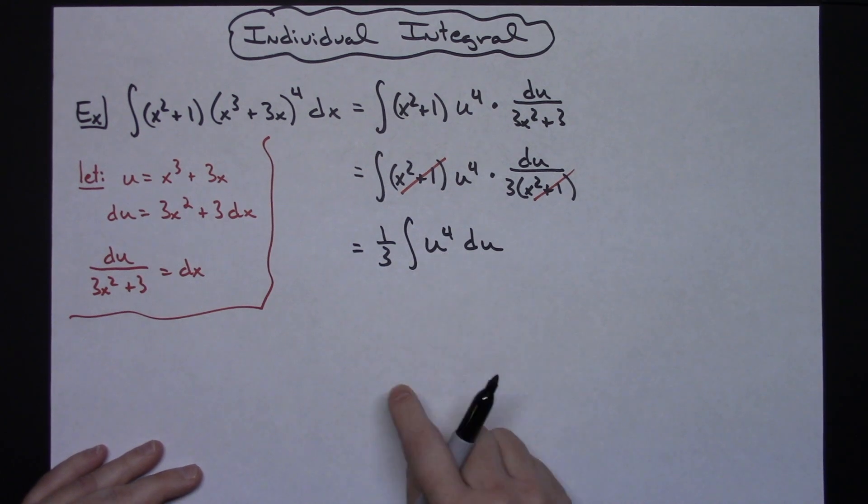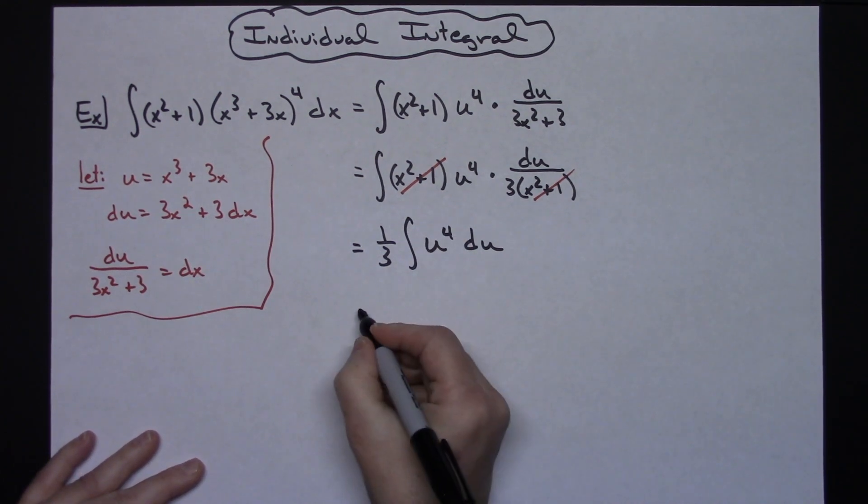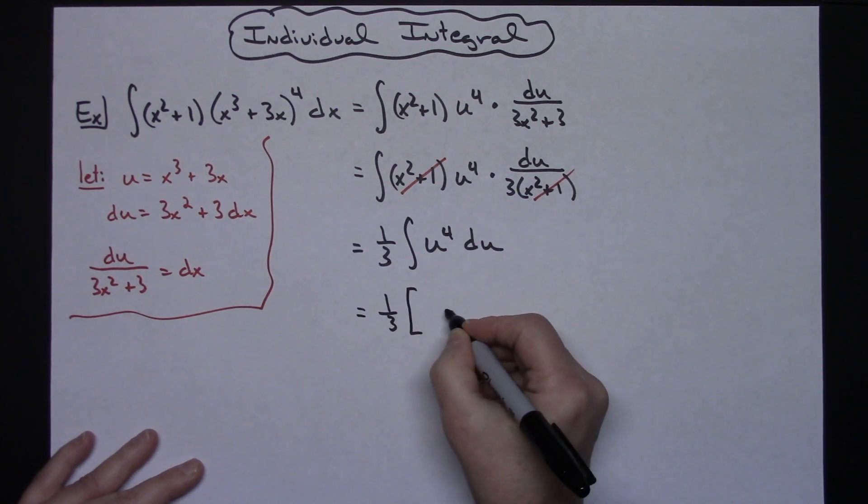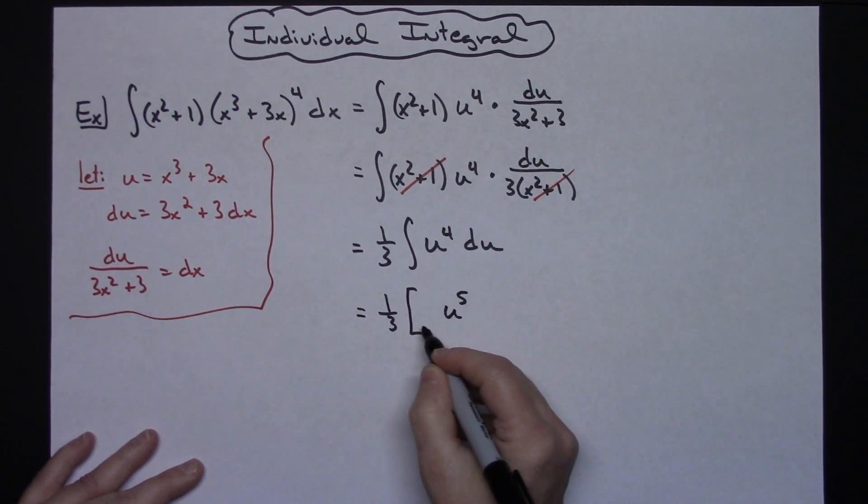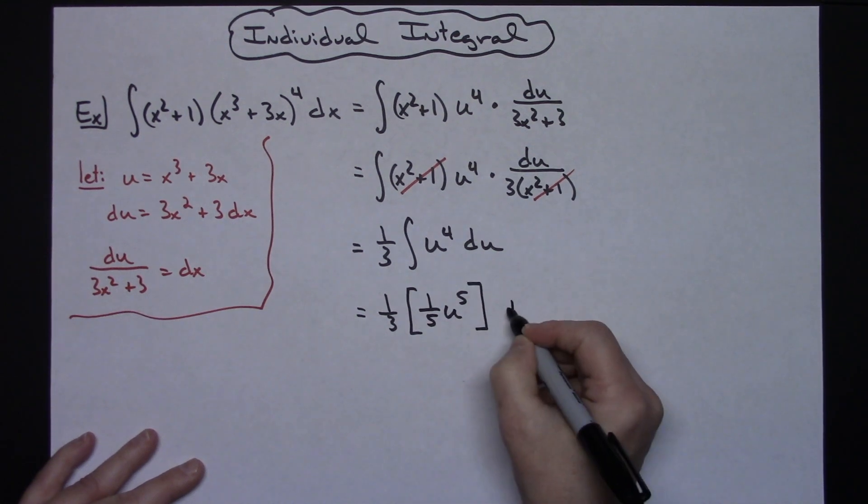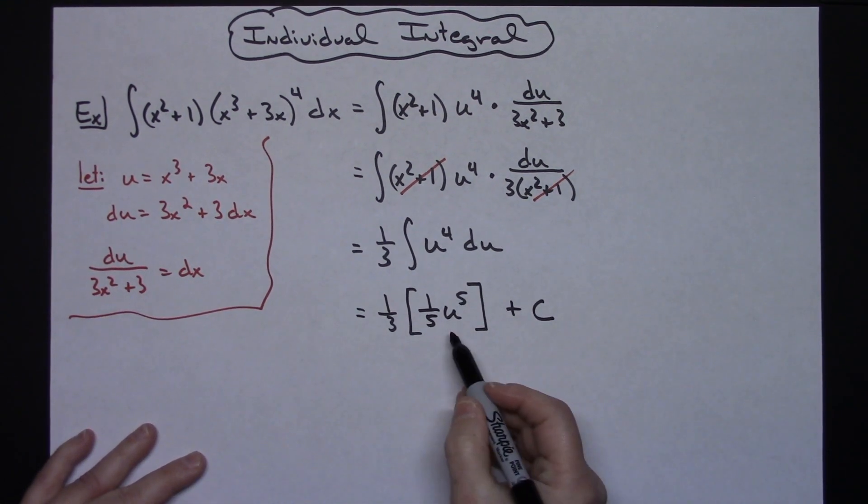So I'm now down to something that we know how to integrate. We'll add 1 to that u, so we'll have u to the fifth, multiplying by that reciprocal there in front, 1 fifth, and then plus C. So the integration there was definitely straightforward.